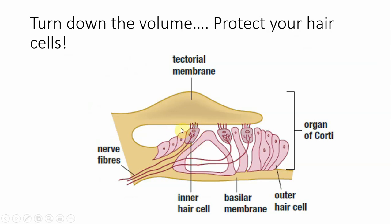Tiny hair cells on the tectorial membrane are very sensitive. The hair cells will be gently bent by the vibrations generated from sound waves traveling into your ear. When the hair cells bend, they create nerve impulses that travel to your brain so you can perceive sound.